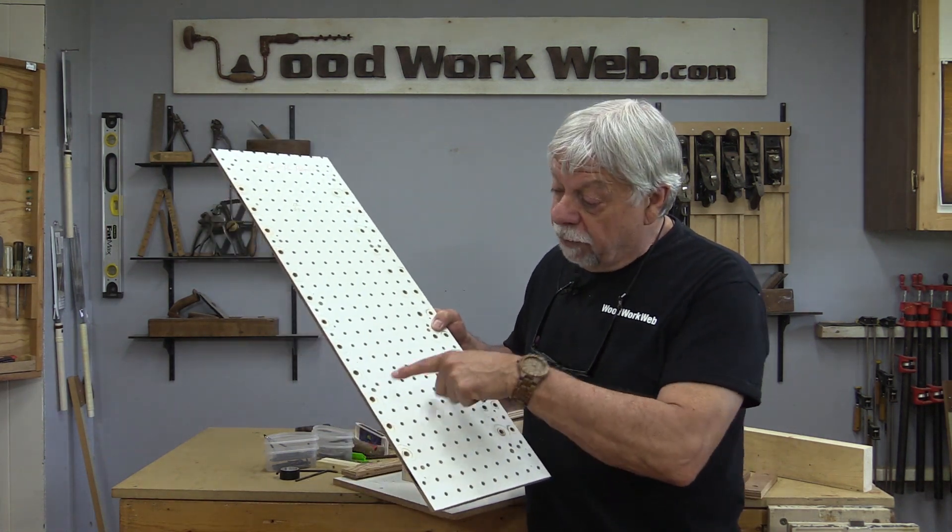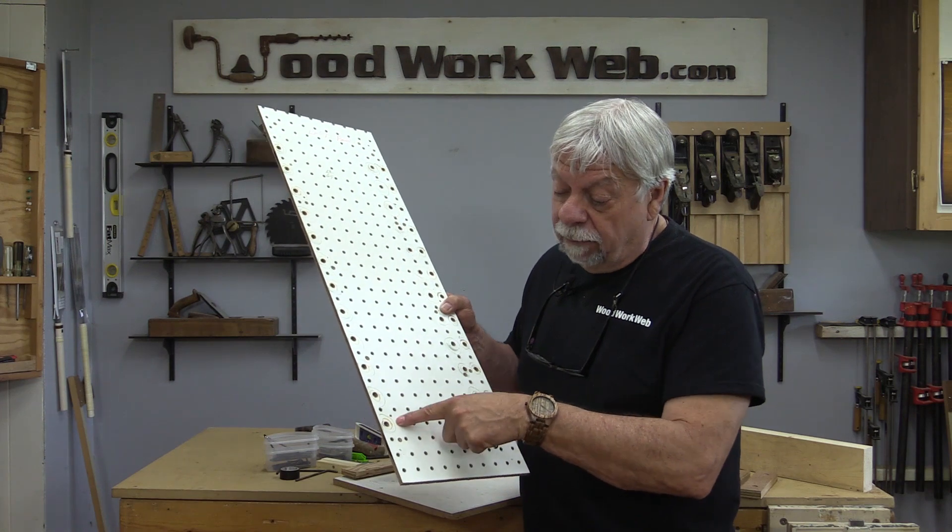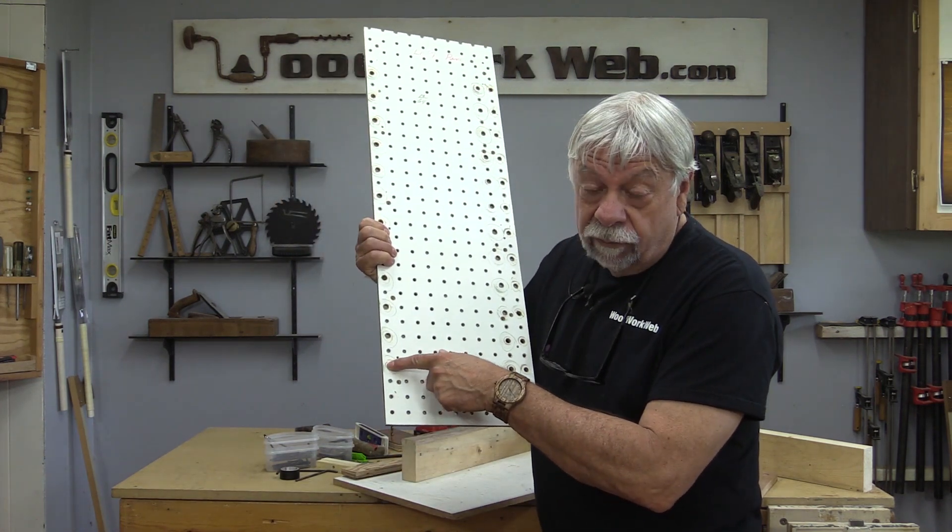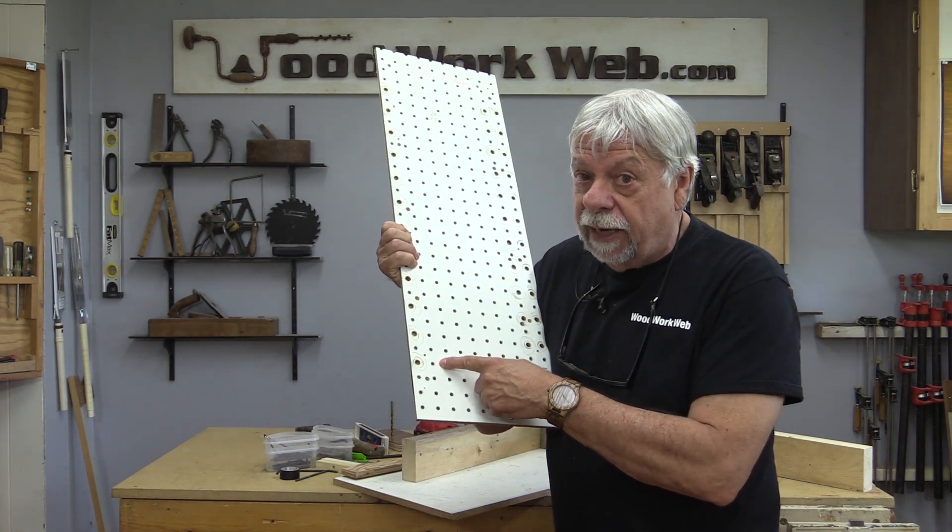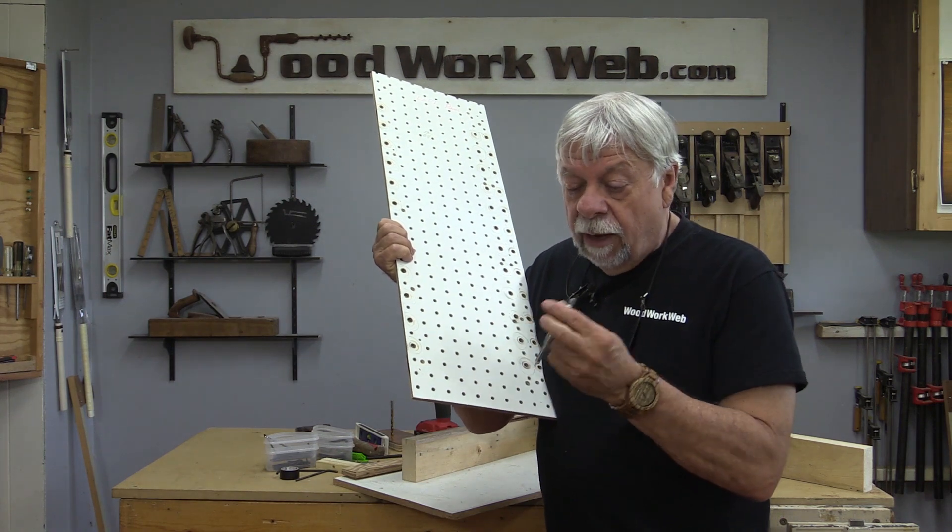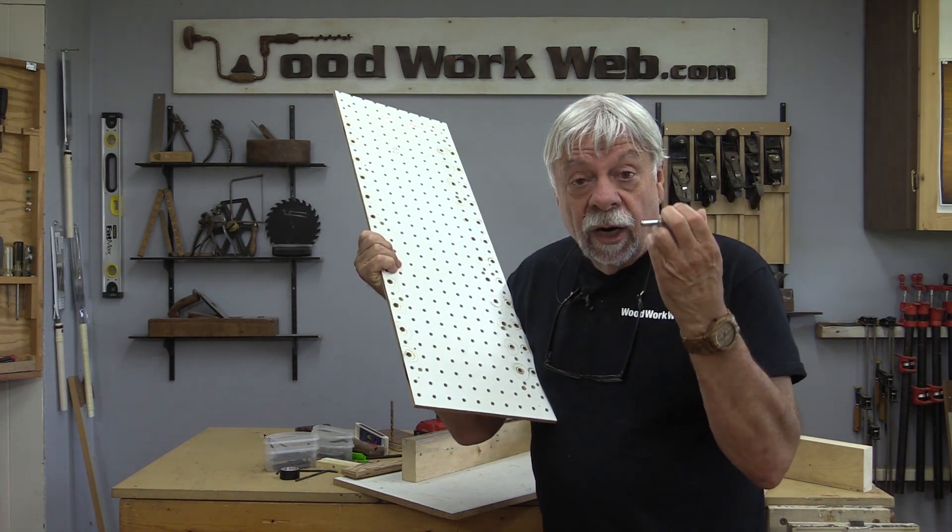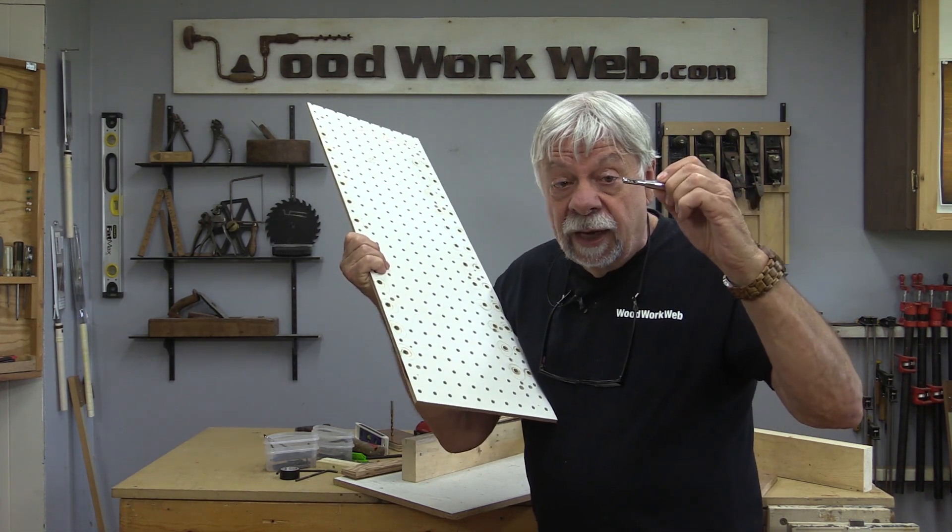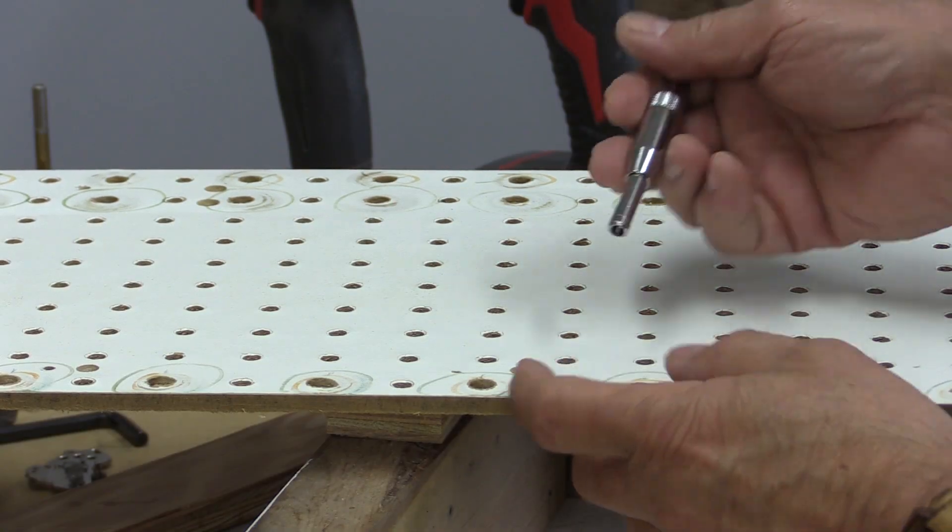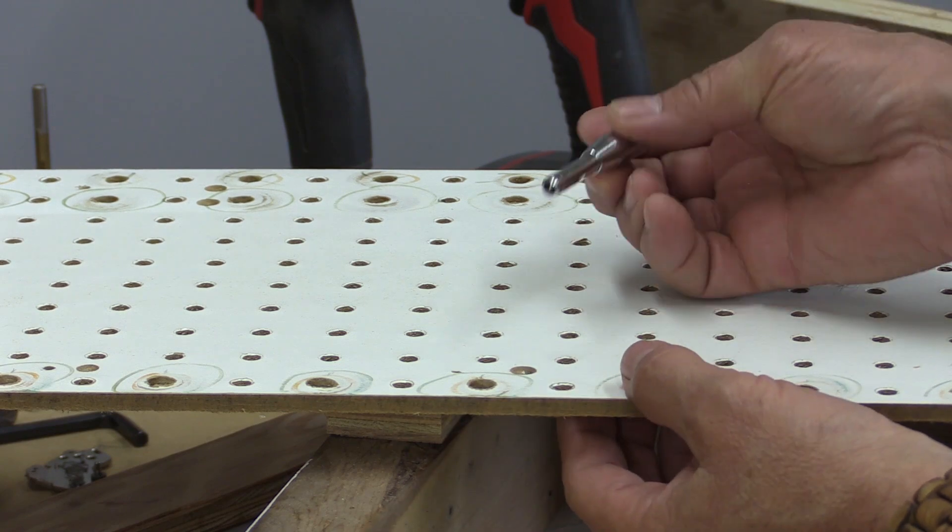The problem with this stuff, as you can tell from some of these holes, is they wear out very quickly. Now the steel is going to do the same thing eventually, but it won't wear out nearly as quickly as this. The one thing that you can use are these little Vicks bits, and I'll show you a close-up of that. So James is suggesting using the steel, and that's a great idea.